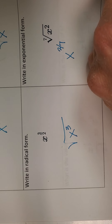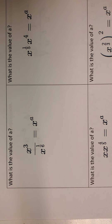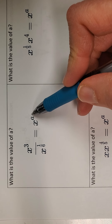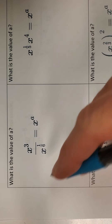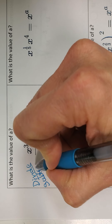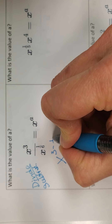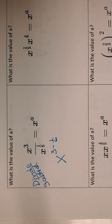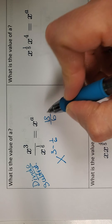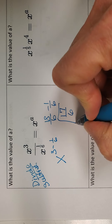The next section deals with fraction exponents and our rules. They're asking you what the value of a is, so you don't have to include the base — just say what a is. I'm using my exponent rules to simplify. I'm dividing, and when dividing I subtract exponents. So it's going to be x to the 3 minus 1 sixth. We need a common denominator: 3 in terms of sixths is 18 sixths, so 18 sixths minus 1 sixth gives me 17 sixths. So a equals 17 sixths.